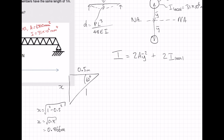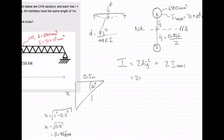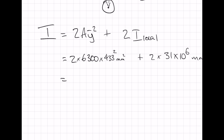So Y bar is equal to 0.866 divided by 2, which is 0.433 meters. We need to convert that to millimeters, so Y bar equals 433 mm. Plugging into our equation: 2 times A (6,300 mm²) times Y bar squared, plus 2 times I local (31 times 10 to the 6 mm⁴).